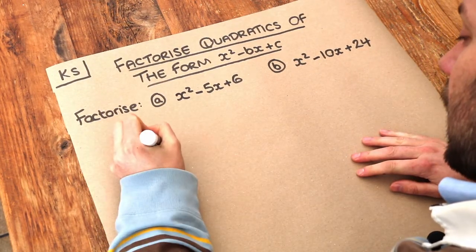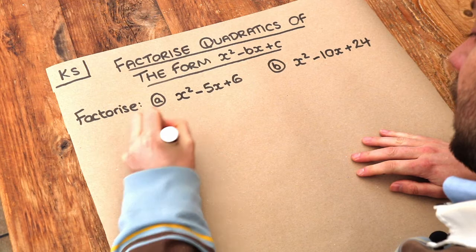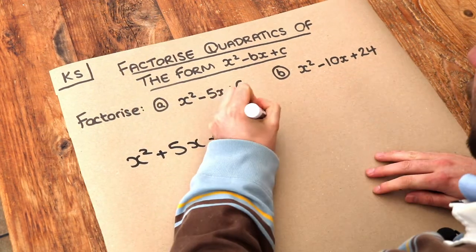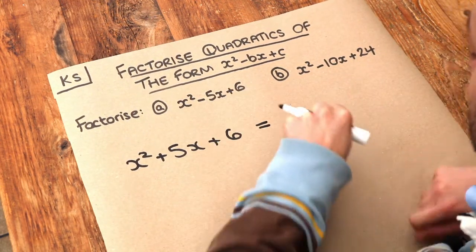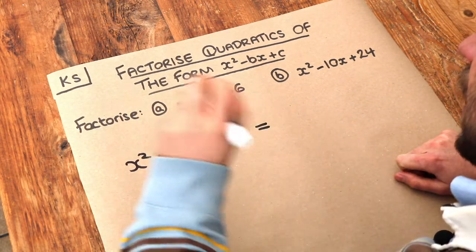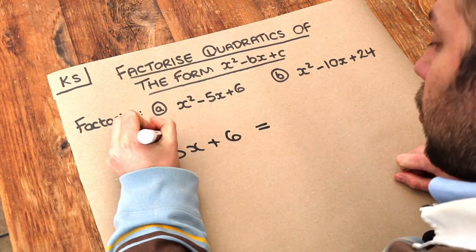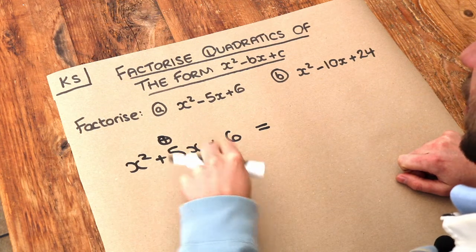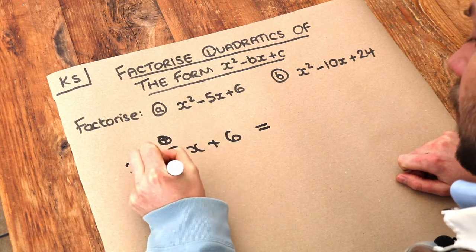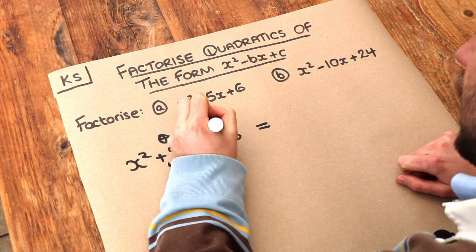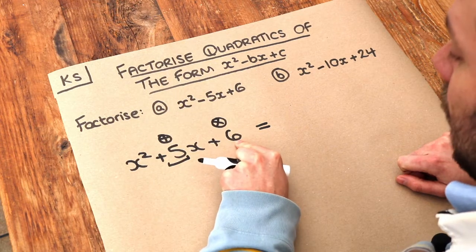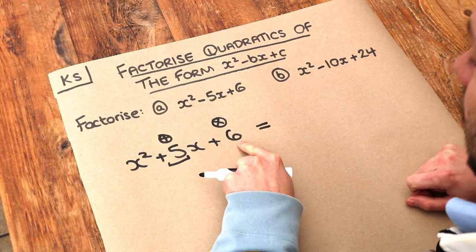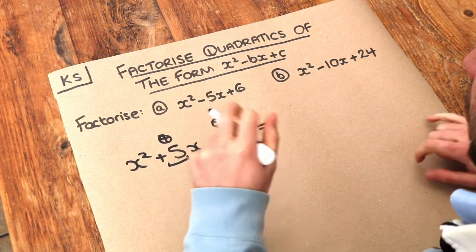If we had x squared plus 5x plus 6, what we did to factorise it — and by the way, factorising means to get it into two brackets — is that we find two numbers which add to give the middle number, the number in front of the x, the 5 here, and multiply to give that constant term, the number at the end. So they've got to add to give 5 and multiply to give 6. Well, those numbers were 3 and 2.